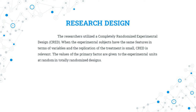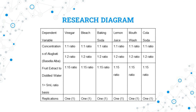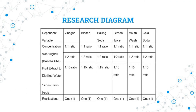About alugbati fruit extract concentration: the independent variables are experimental subjects studied. The independent variable is the concentration of alugbati fruit extract to distilled water — varying amounts of distilled water mixed with the alugbati fruit extract. The dependent variables are the following: vinegar, bleach, baking soda, lemon juice, mouthwash, and cola.